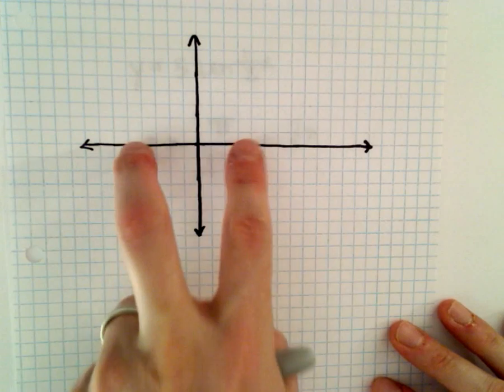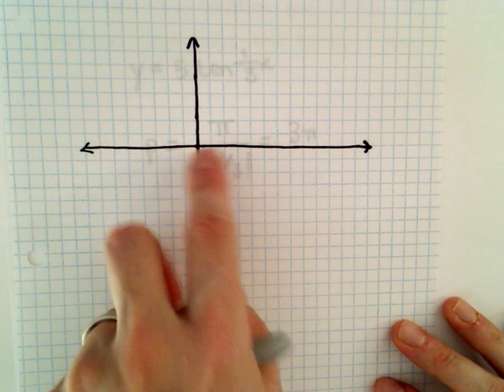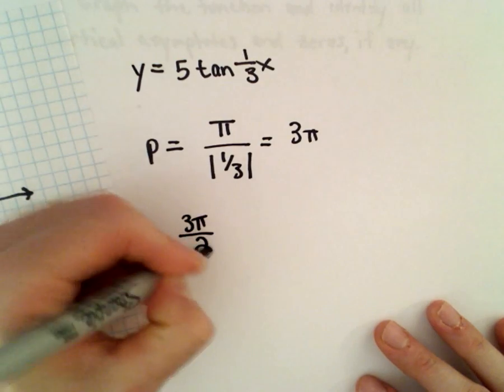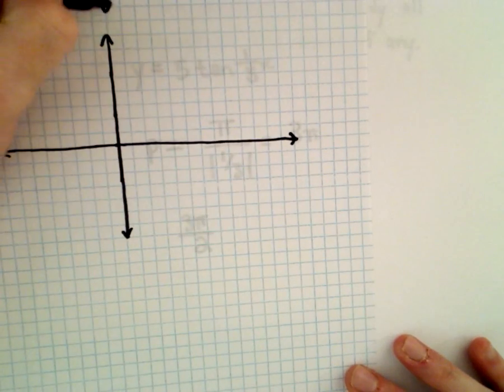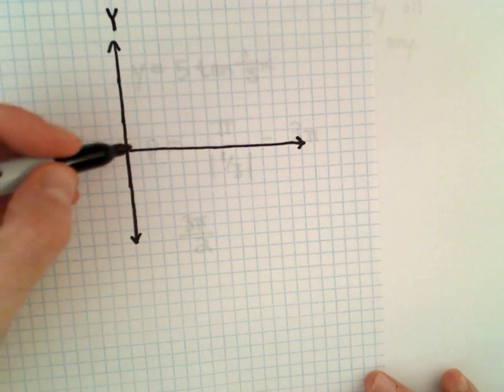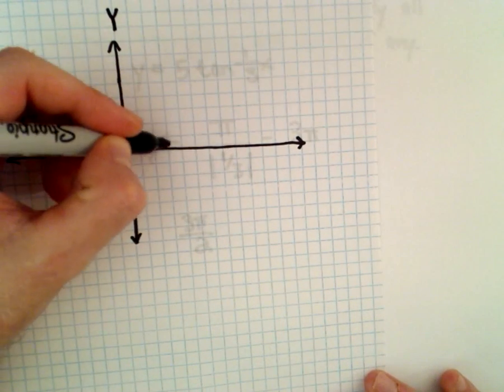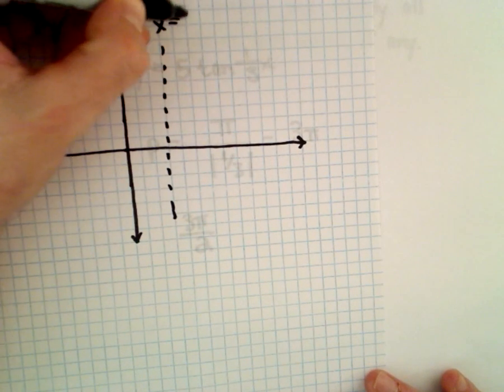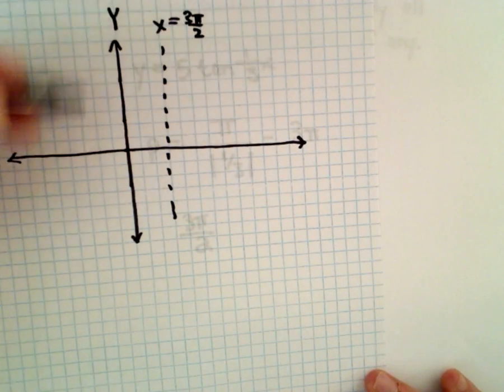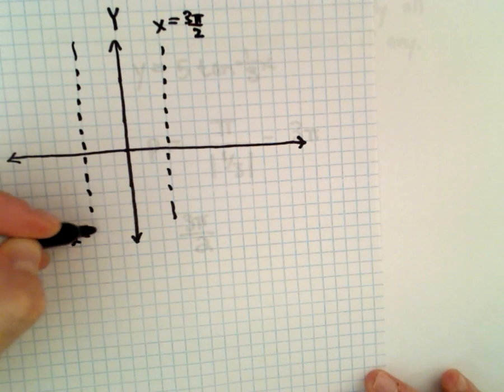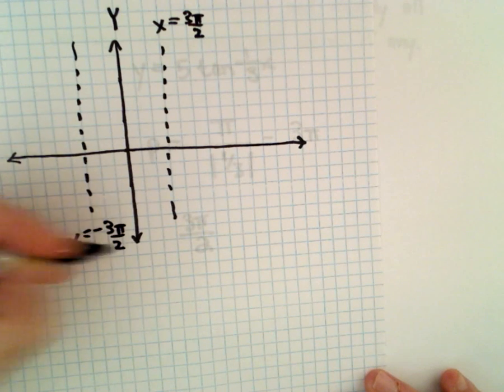Okay, so for tangent, if you take the period and divide it by two, that'll be three pi over two. If you move over that many units from the y-axis to the right and to the left, those will be your first vertical asymptotes. So here's going to be the line x equals three pi over two, and this will be the vertical asymptote x equals negative three pi over two.